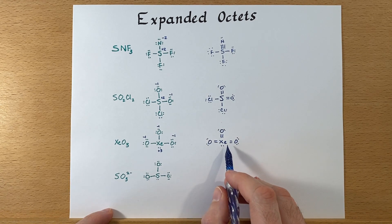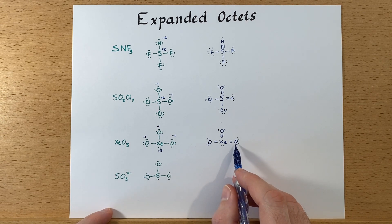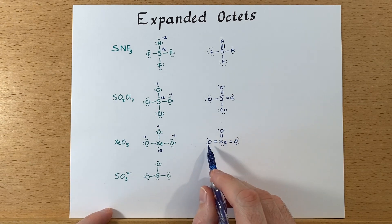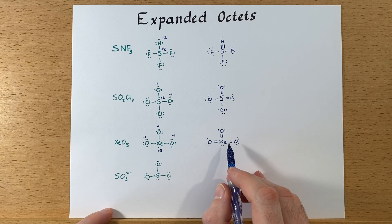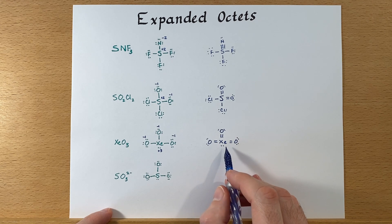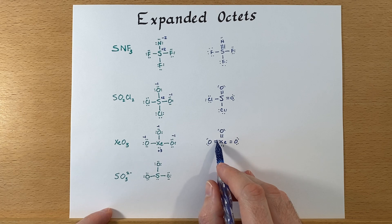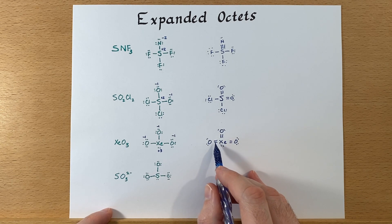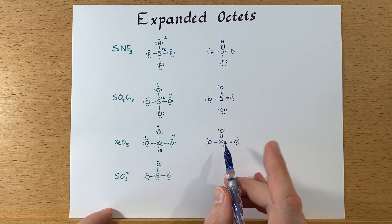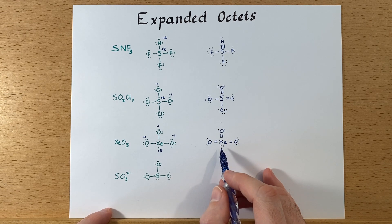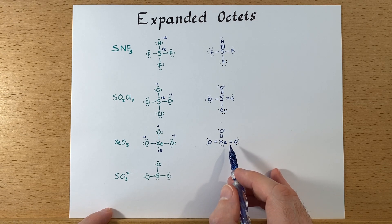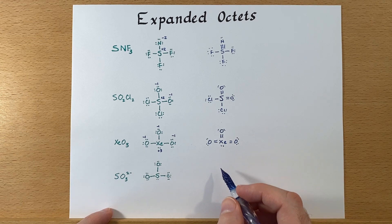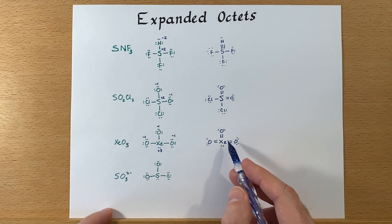In this case now, we know that this is a formal charge of zero in each case, and then we just need to total up the electrons on xenon to check it. One, two, three, four, five, six, seven, eight. It has eight electrons around it now. It started with eight, so this has a formal charge of zero. Excellent. So this is a better structure.